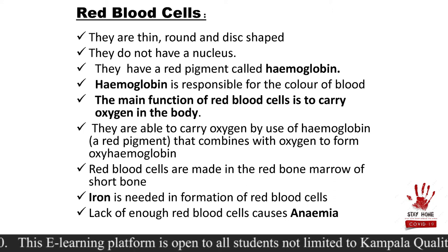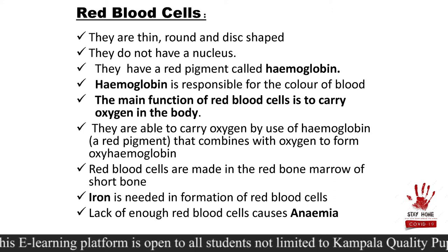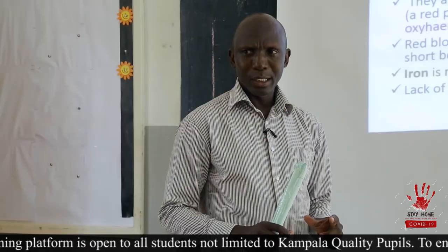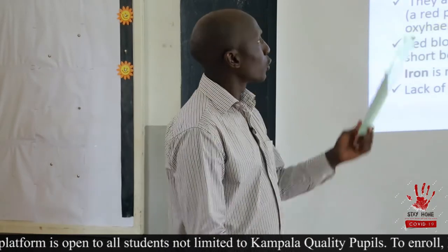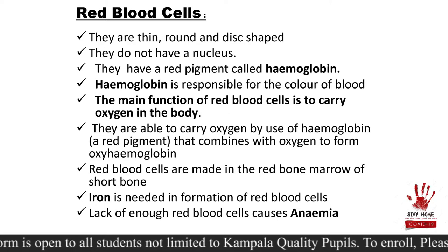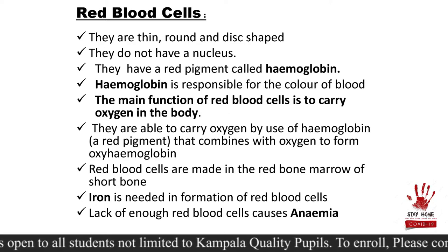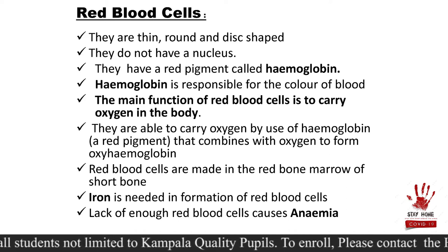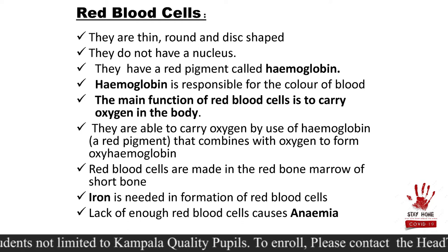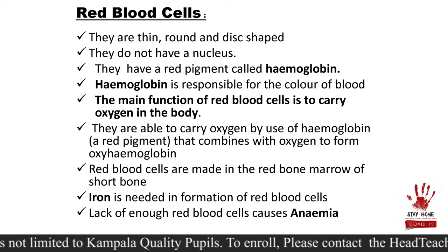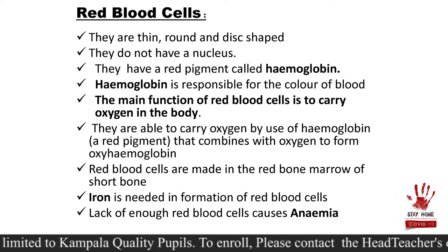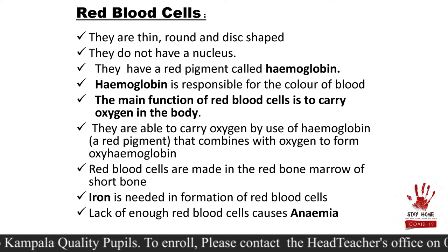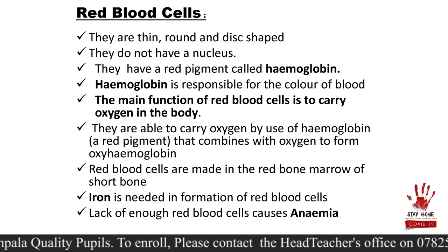They are like a donut. They don't have a nucleus — a nucleus is the central part which does most of the cell activities. They have a red pigment called hemoglobin. This hemoglobin is responsible for the red color of the blood we see. Now you have known why we are calling them red blood cells — because of this substance called hemoglobin.